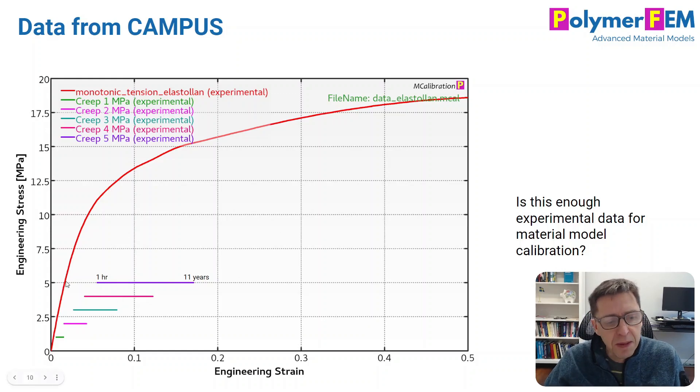It's really interesting. You can now see the difference between the creep curve and the monotonic curve. The first hour we get here, after 11 years we get here. We see it's a very viscoelastic material. It changes properties significantly over time, so this is very good for us when we want to simulate this behavior.